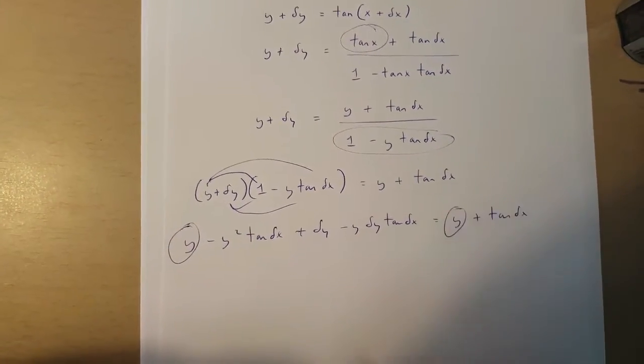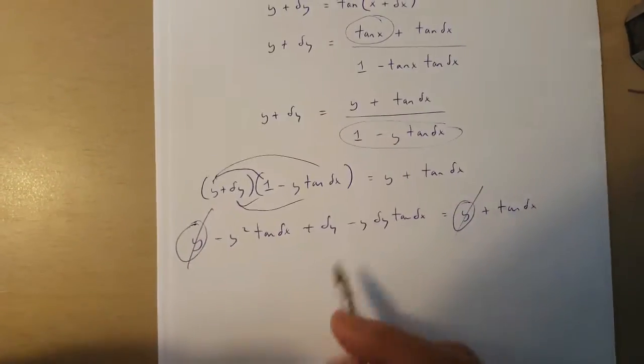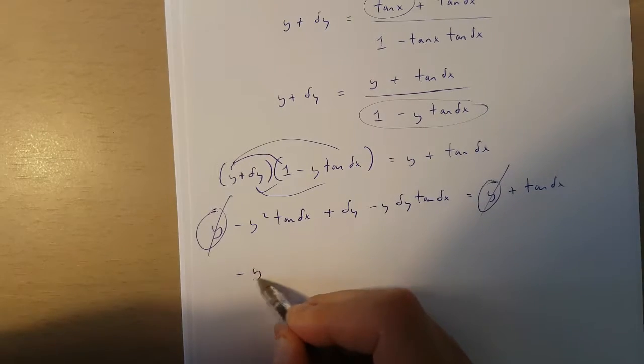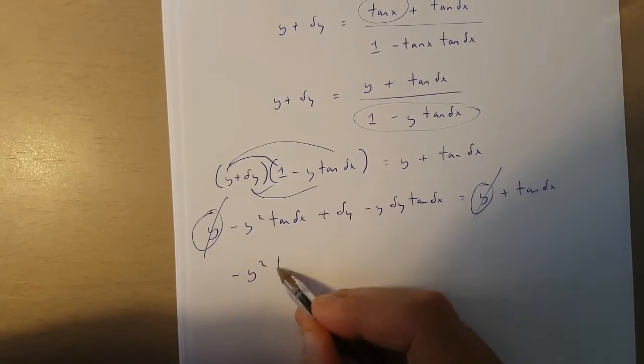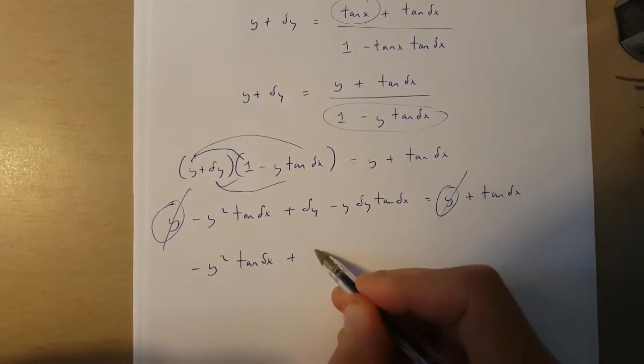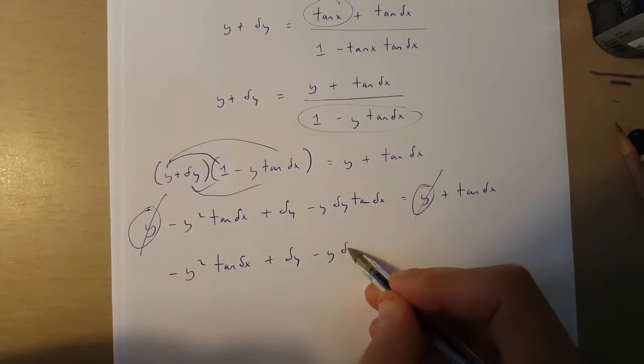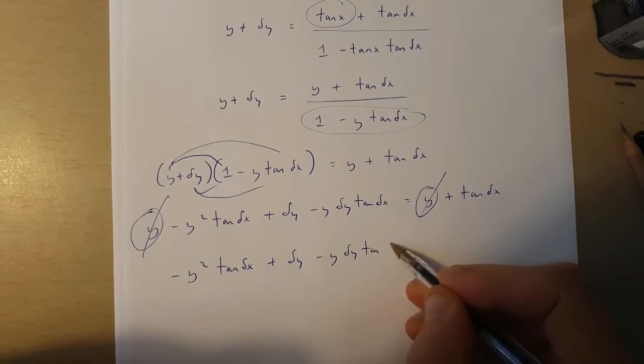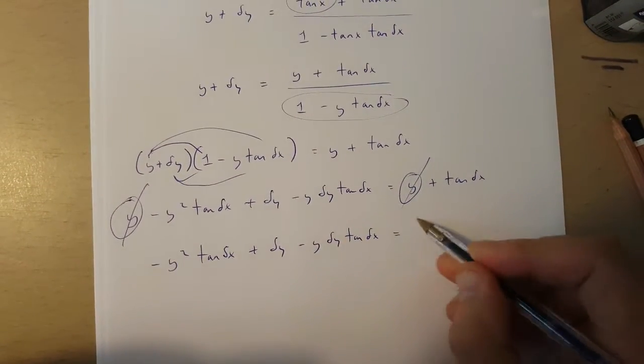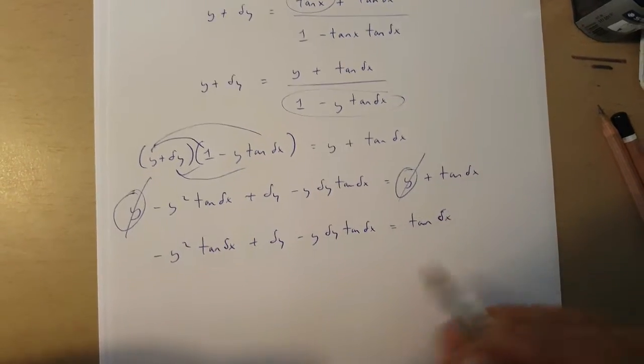Now we've got a y over here and we've got a y over here, so they cancel each other out. And what we're left with is minus y squared times tan change in x plus change in y minus y times change in y tan change in x is equal to tan change in x.